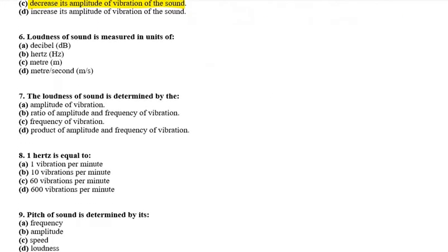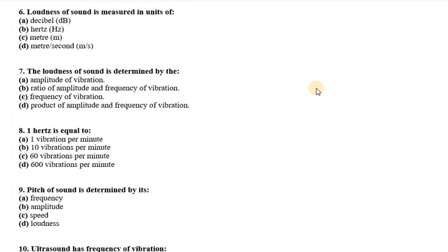Sixth one is, loudness of sound is measured in units of decibel, hertz, meter, or meter per second. It is A option, that is decibel. Seventh is, the loudness of sound is determined by the amplitude of vibration, ratio of amplitude and frequency, frequency of vibration, or product of amplitude and frequency. Right option here is amplitude of vibration. As we've discussed multiple times, loudness of sound depends on amplitude.